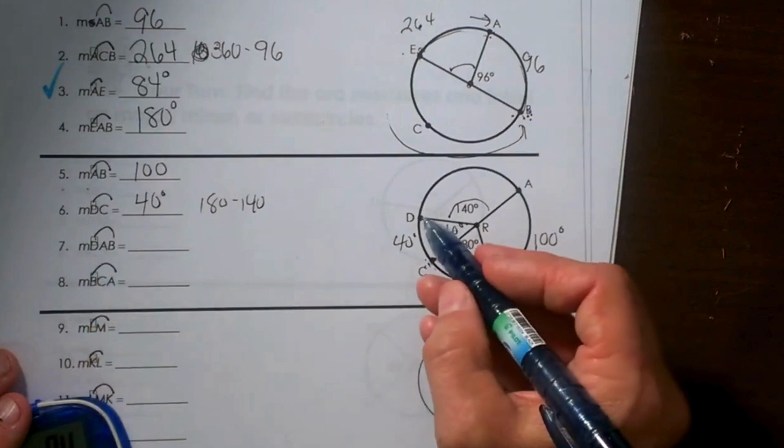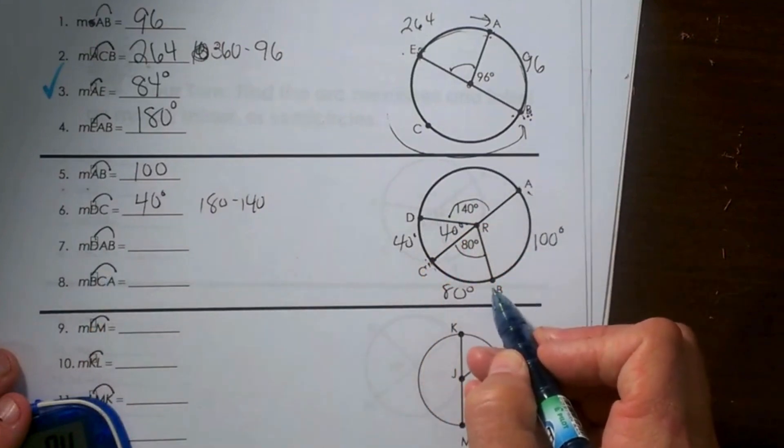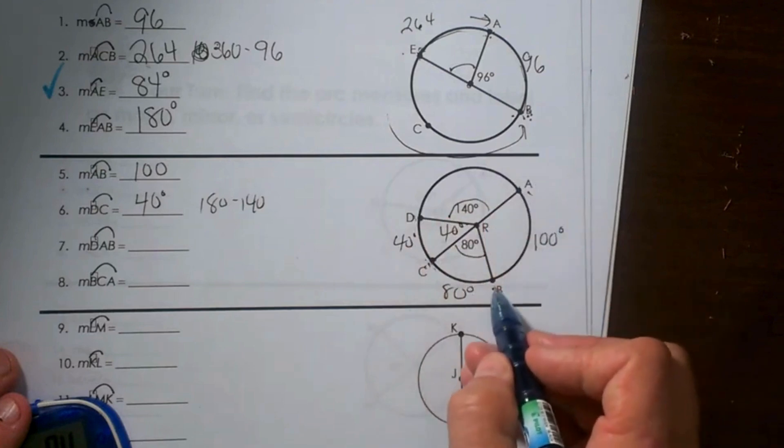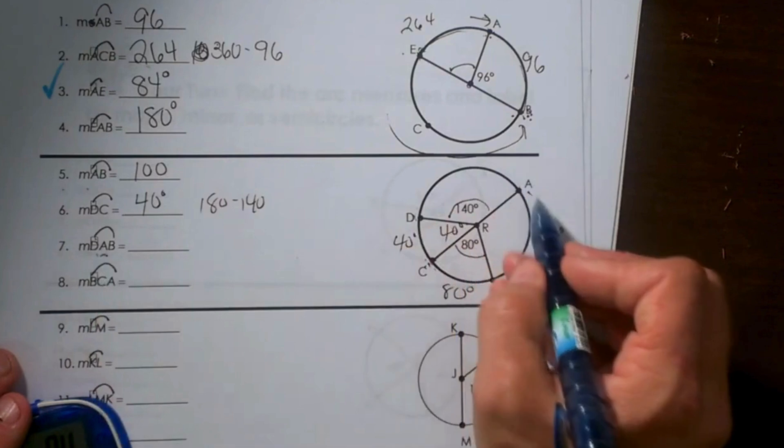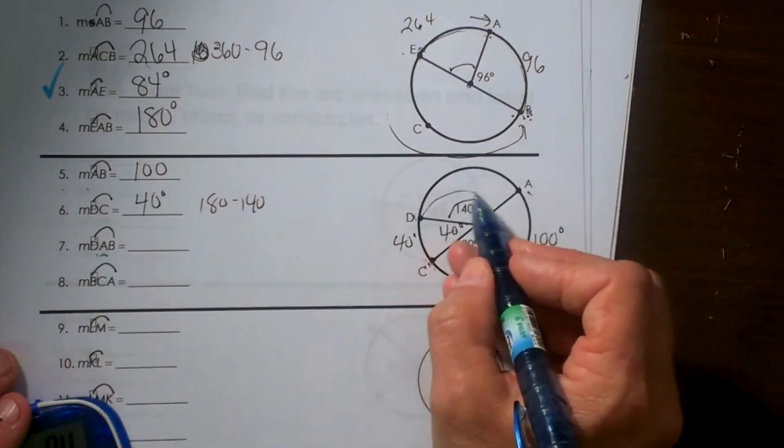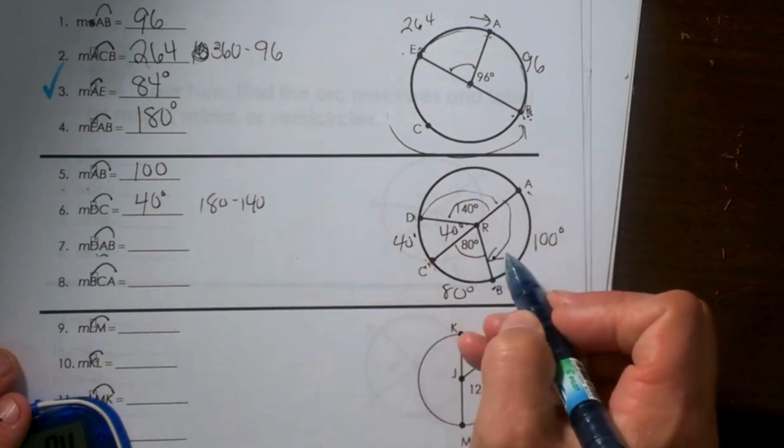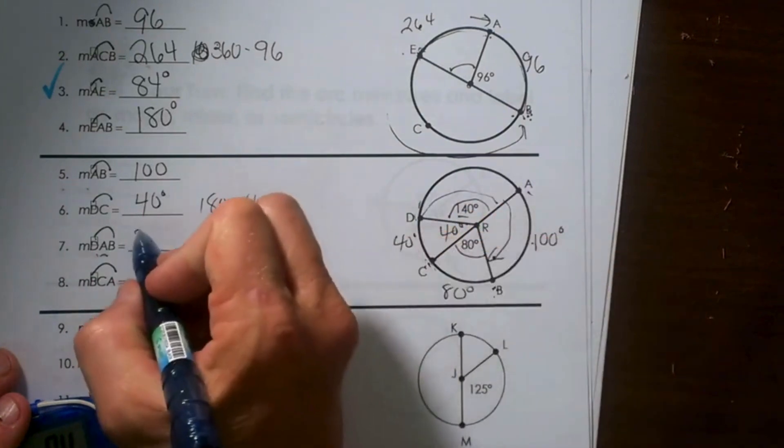D, AB - D through A all the way to B, so we are going this direction from D to B, because it tells us to go through A. So that is a major arc, it is more than half the circle. I am going to take this arc plus this arc and add them together to get the whole arc. So 140 plus 100 is 240.